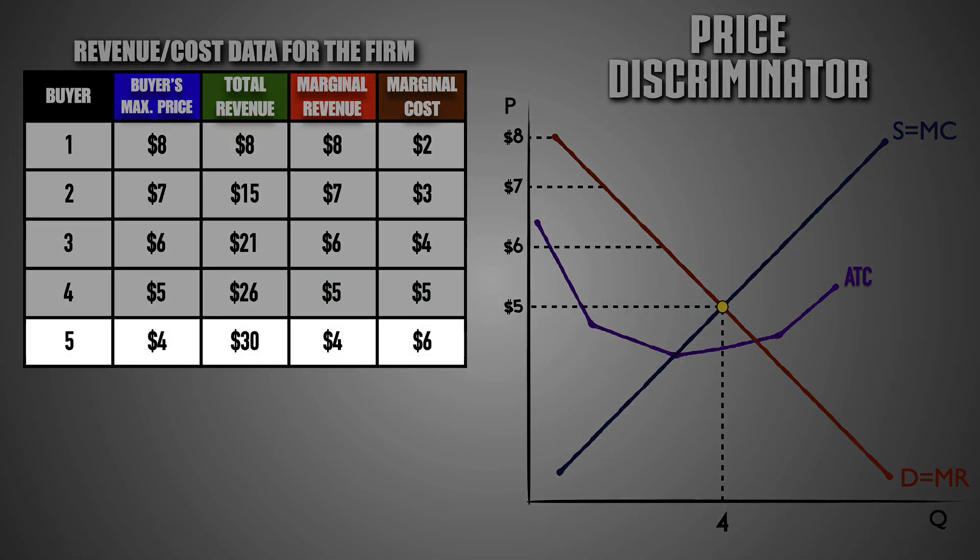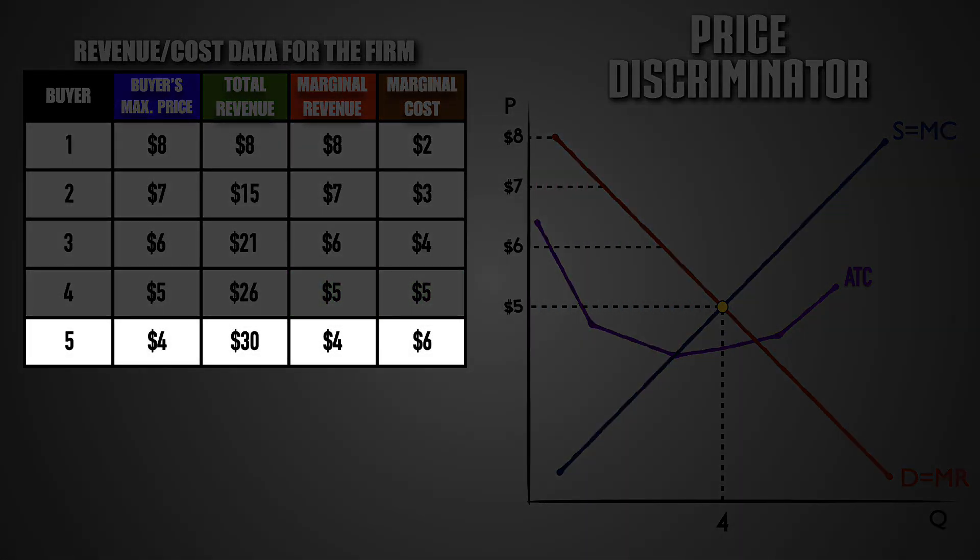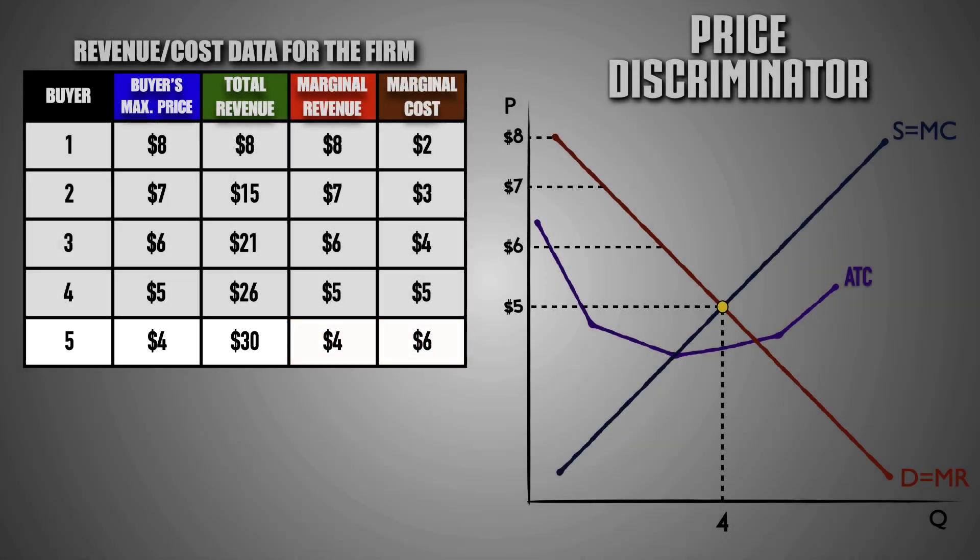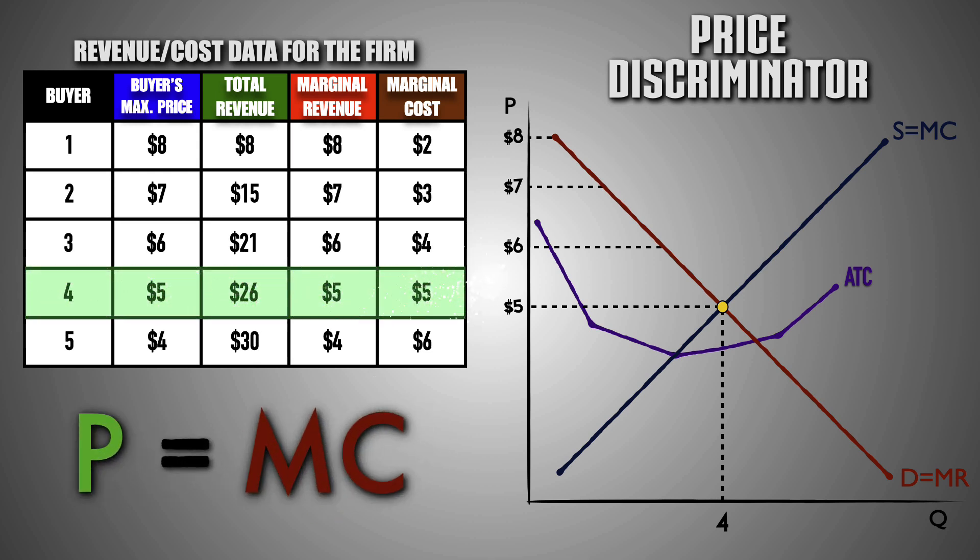This is the point where marginal revenue equals marginal cost for the firm. From here, it's no longer profitable for the firm to continue production because the marginal revenue of the next unit sold is less than the marginal cost to produce it. As a result, the firm has reached its profit maximization point and is now producing the socially optimal level of output. At this point, because the price discriminator is producing where price equals marginal cost, it's producing an allocatively efficient quantity of output.